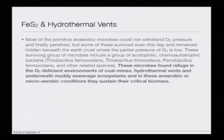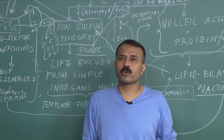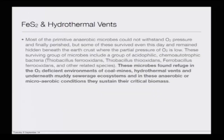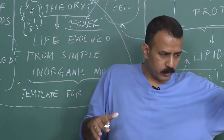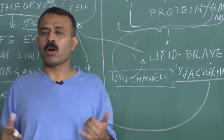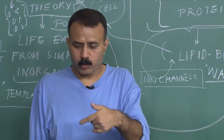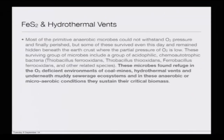These surviving groups of microbes include acidophilic chemoautotrophic bacteria: Thiobacillus ferrooxidans, Thiobacillus thiooxidans, Ferrobacillus ferrooxidans, and other related species. These microbes found refuge in the oxygen-deficient environment of coal mines, hydrothermal vents, and muddy sewerage ecosystems. That is why the iron sulfur theory is called the hydrothermal origin of life — because these life forms now survive in hydrothermal vents underneath. If you walk by the street where there is a drain, under the mud where there is a lack of oxygen, you will see iron pyrite present, with bacteria that eat upon it.